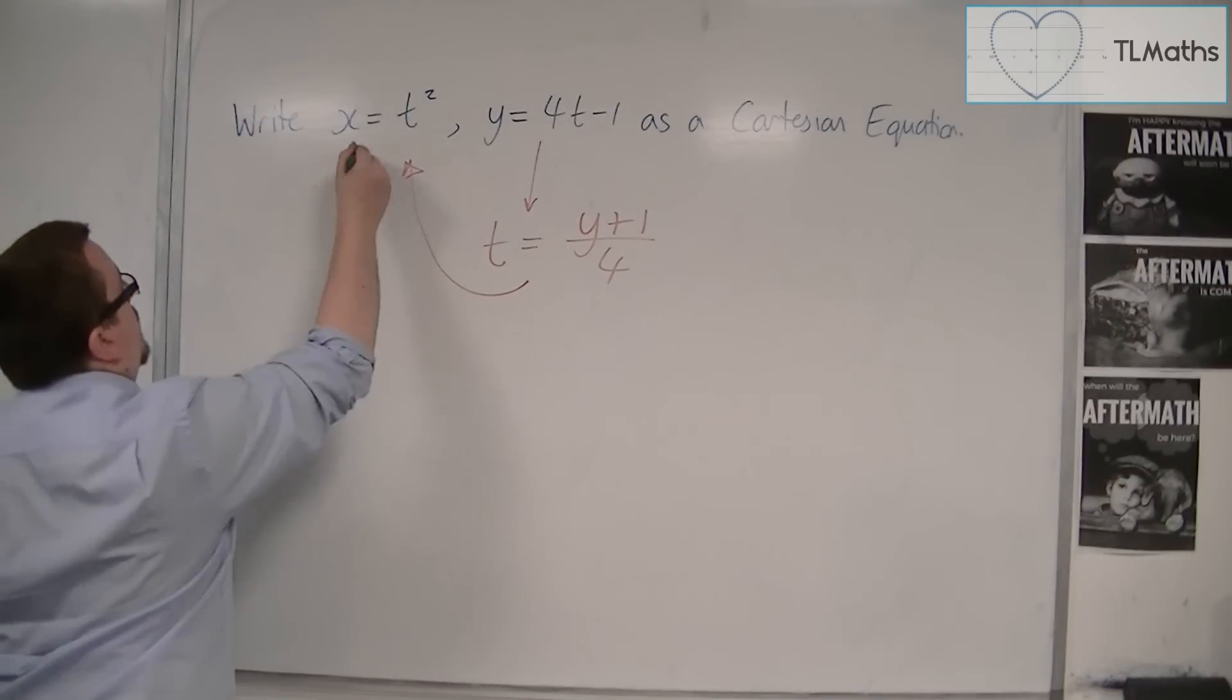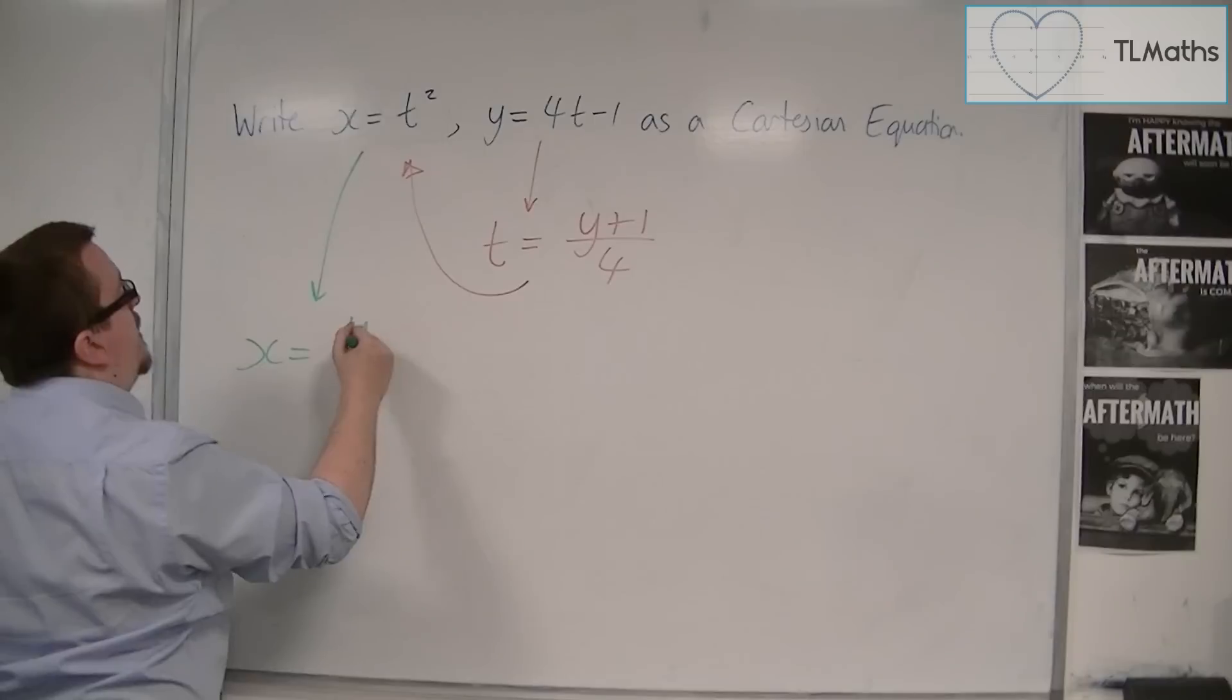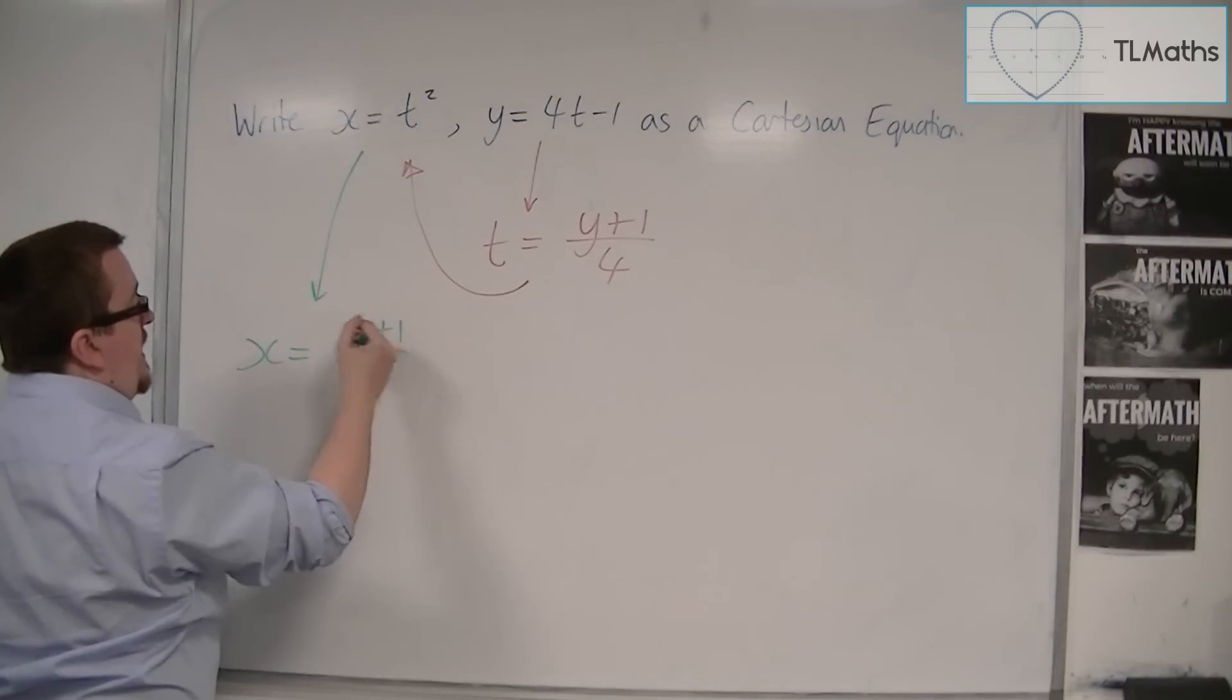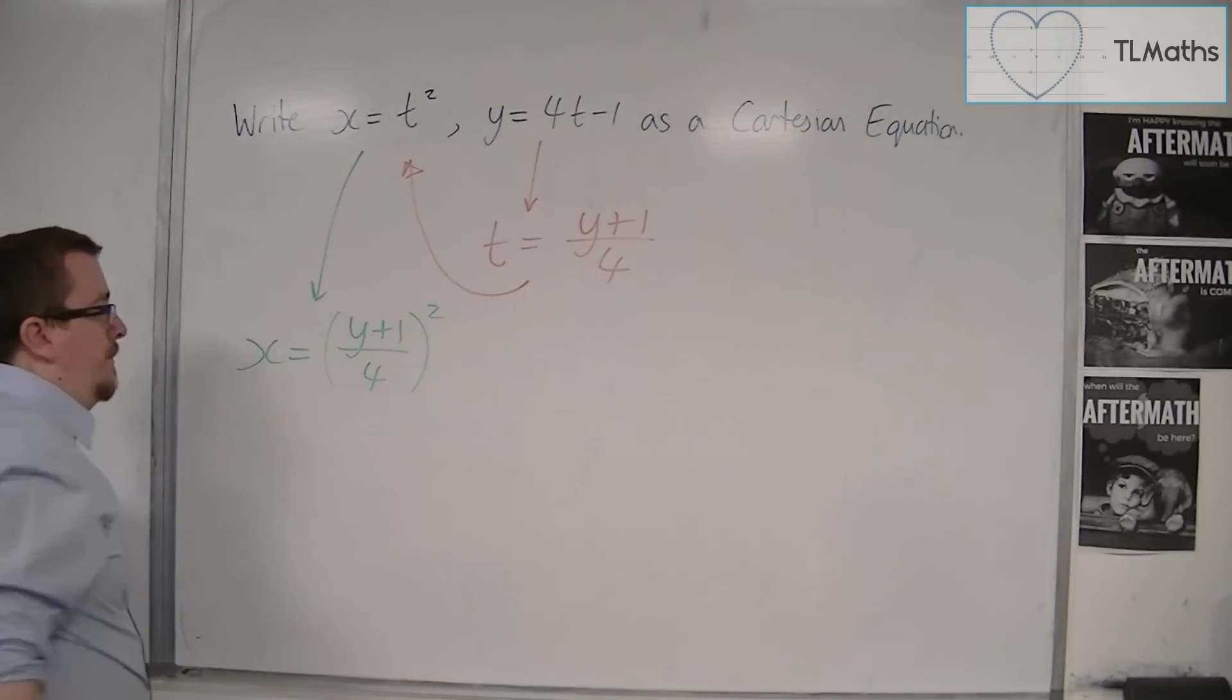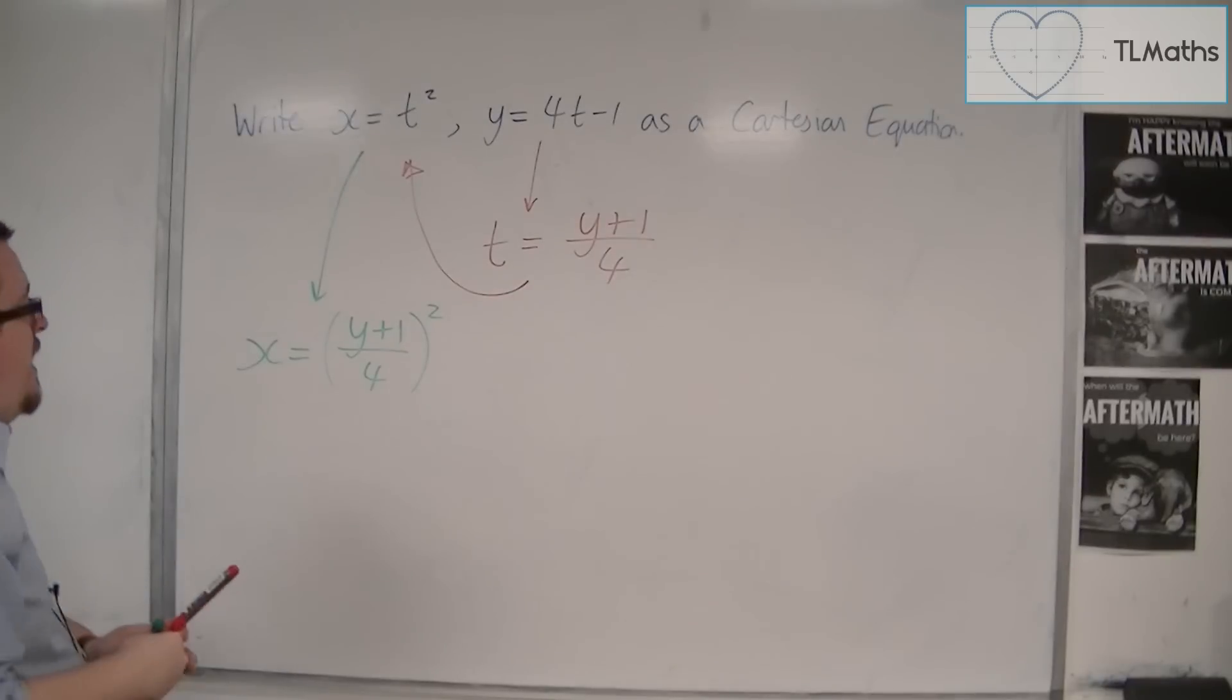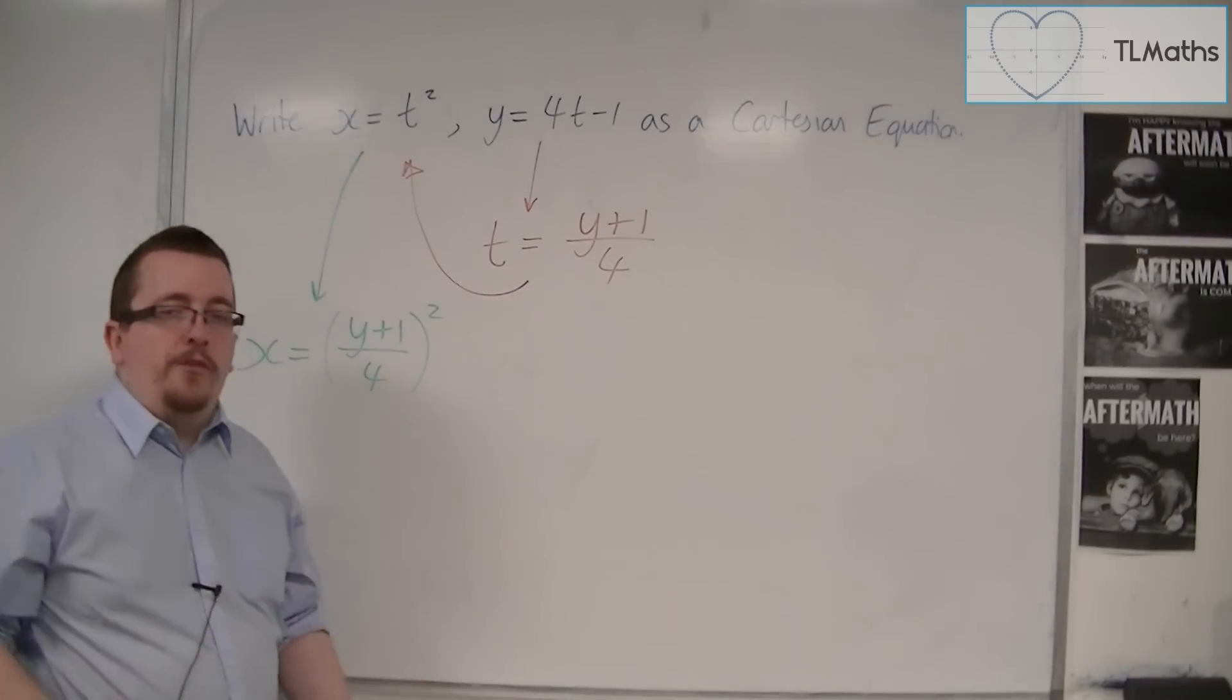So I'm going to get x equals y plus 1 over 4, that's t, squared. And that's the way that I would want to write it.